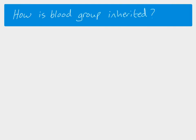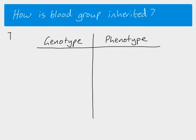Let's look at blood group in a bit more detail by examining the genotype and then the phenotype. First of all, we could have the genotype I^A I^A, and no surprise that the phenotype is A — blood group A.